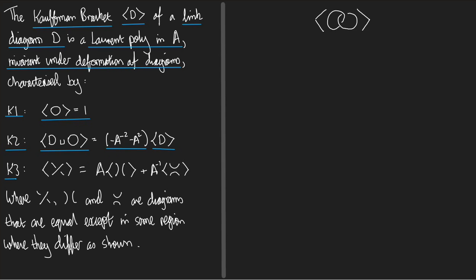K3 says that if we've got a diagram that's got a crossing in it, then its Kauffman Bracket is A times the diagram that I get by smoothing the crossing one way, plus A inverse times the diagram I get by smoothing the crossing the other way. These little symbols are diagrams representing diagrams that are equal everywhere except in some little region where they differ as shown.